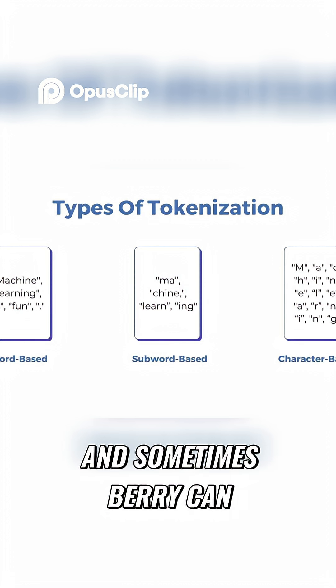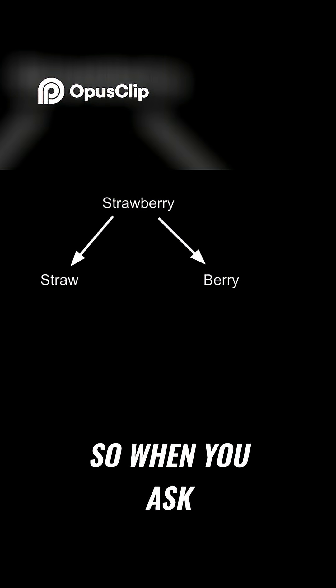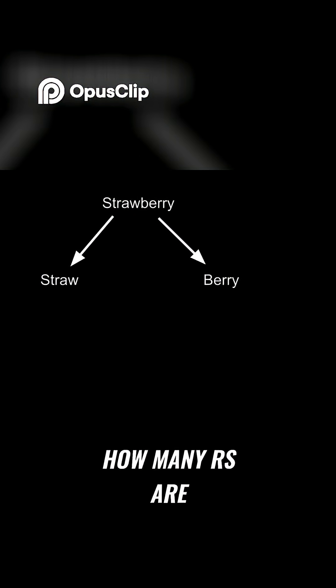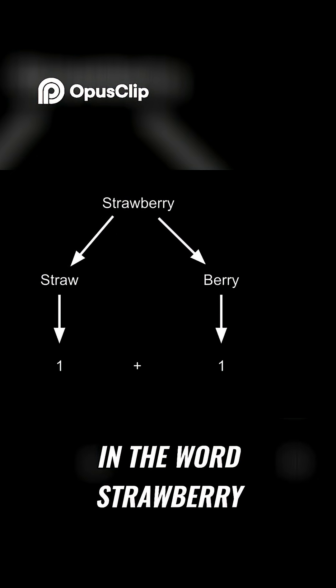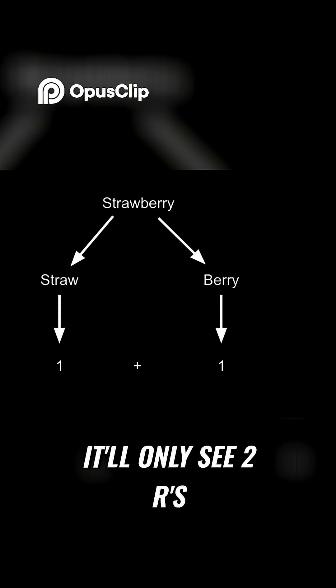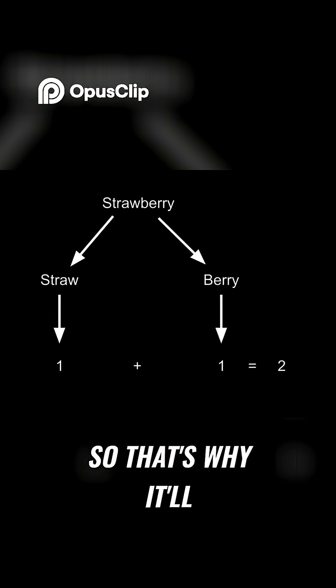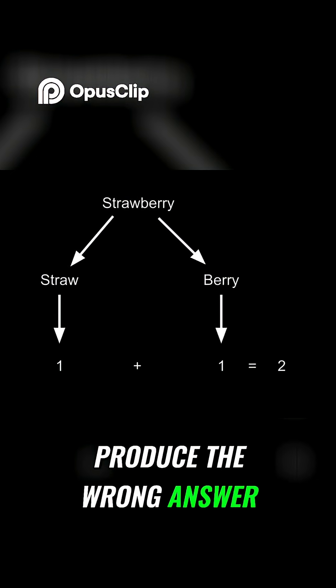Sometimes 'berry' can be represented as one entire token. So when you ask the model how many R's are in the word 'strawberry,' it'll only see two R's — that's why it produces the wrong answer.